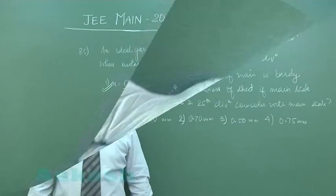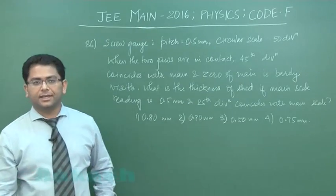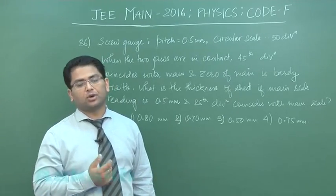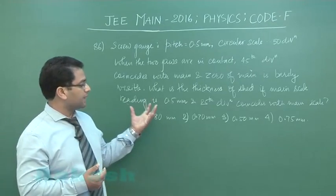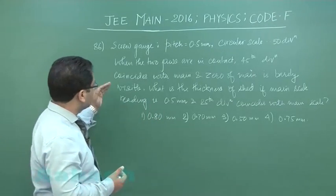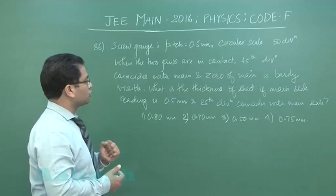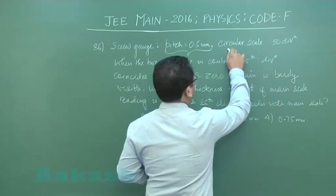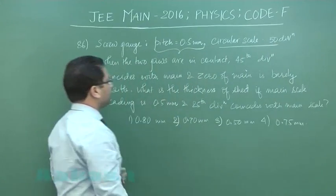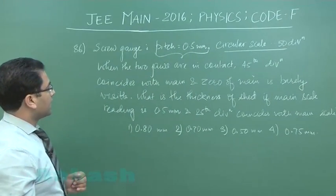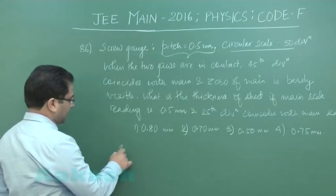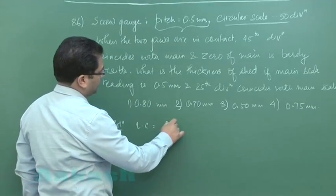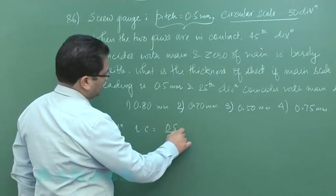Question number 86, again from experimental physics, thereby indicating the importance of this particular topic. This time the measuring instrument is the micrometer screw gauge which has a pitch of 0.5 mm and a circular scale with 50 divisions. From this we can calculate the least count: pitch by circular scale divisions, which is 0.01 mm.